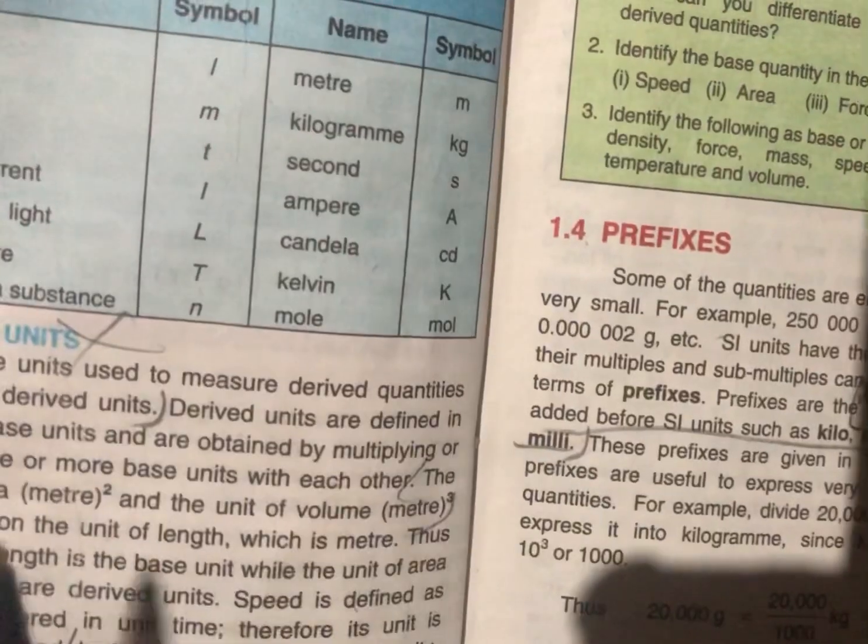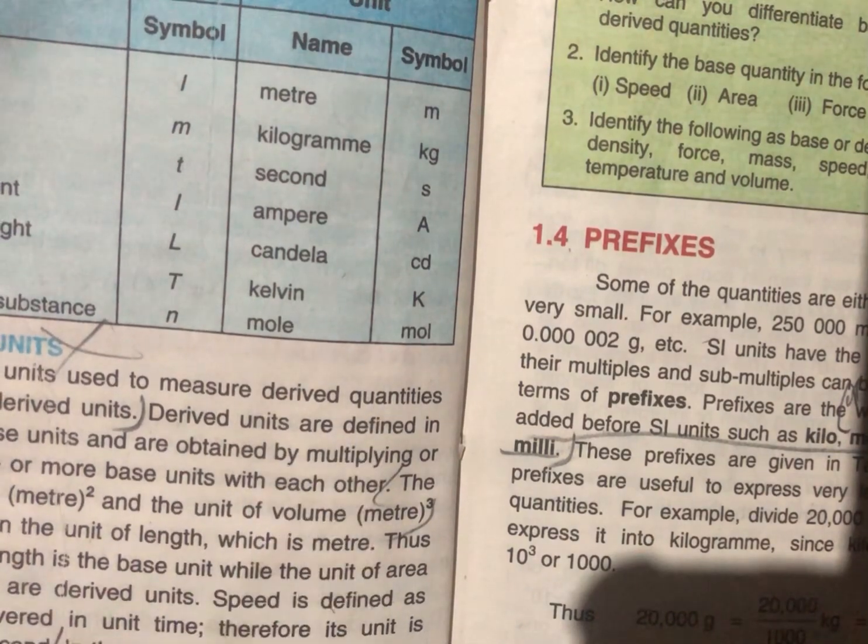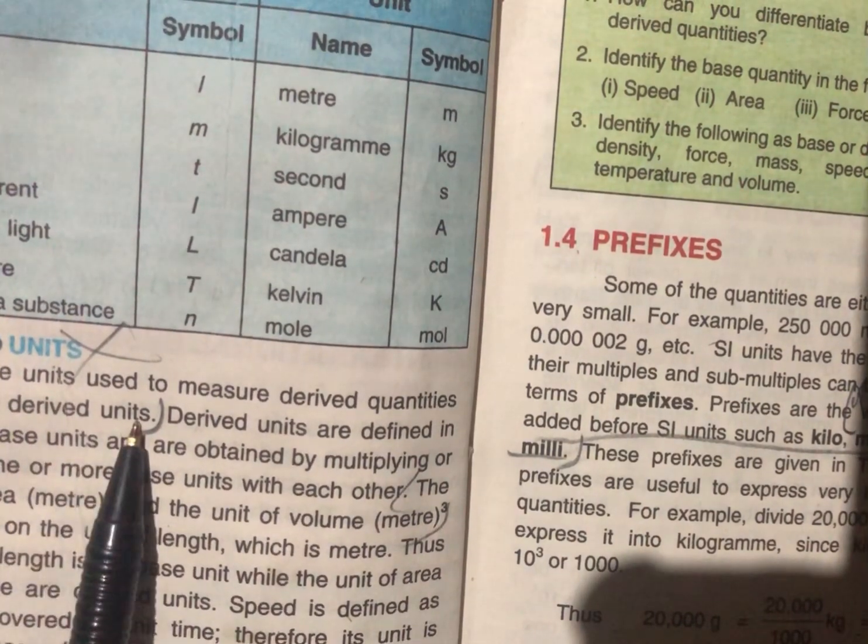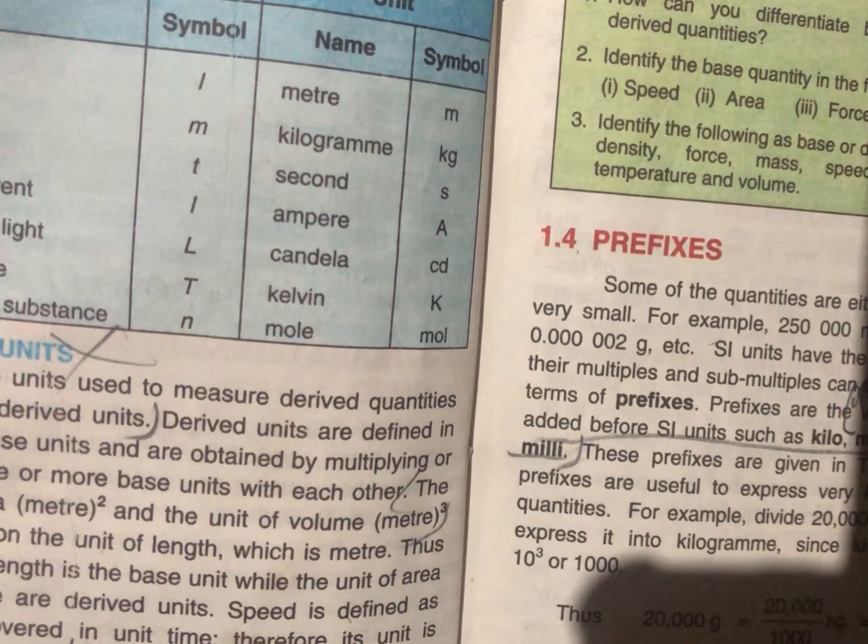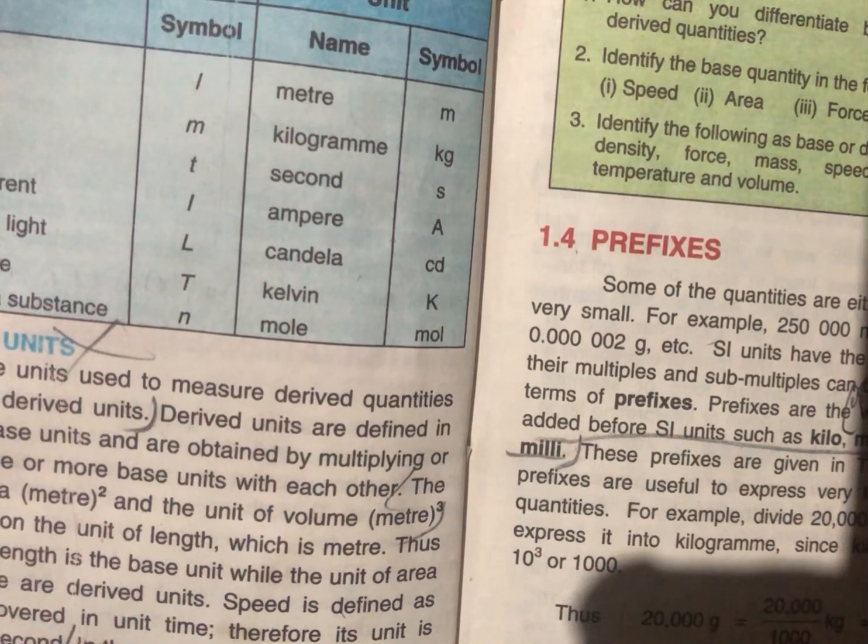Now we have a derived quantity. The units used to measure derived quantities are called derived units. Derived units are used to measure derived quantities. The derived units are defined in terms of base units.